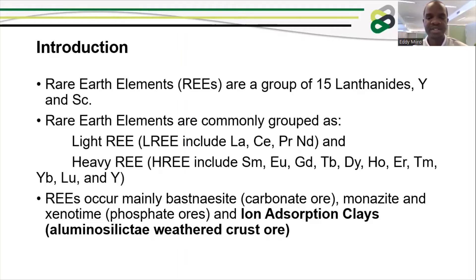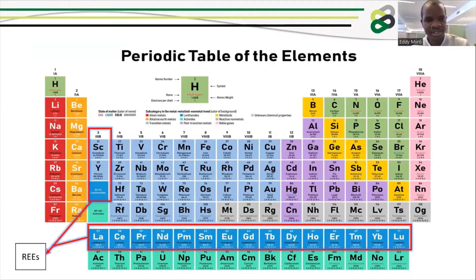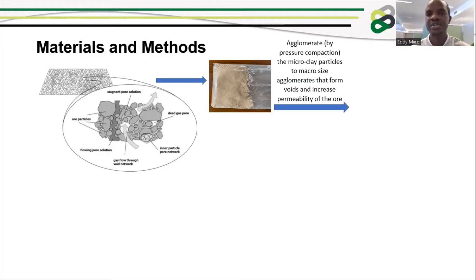Our major emphasis is on the iron adsorption clays. Iron adsorption clays are aluminosilicate weathered granite ores. Unlike other clay ores, you have to form macro-sized agglomerates to improve the permeability. This research focuses on improving the permeability of a clay ore heap by agglomeration to form more solution flow channels and reagent flow channels through pressure compaction of clay particles into macro-size agglomerates.